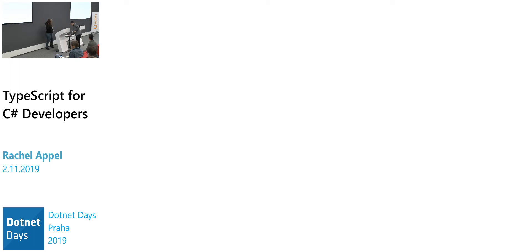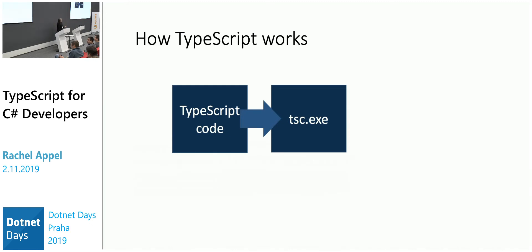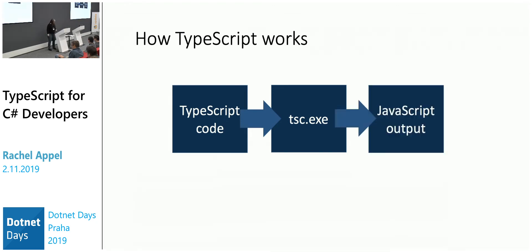So how does TypeScript work? You write TypeScript code — and you can mix in JavaScript, that's fine. Then you compile it, just like any other code. You get JavaScript output from TypeScript. It goes through the TypeScript compiler and gives us JavaScript in the flavor we want: ES5, ES6, or whatever we're targeting.